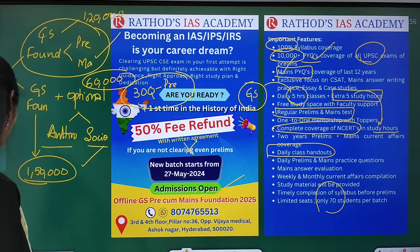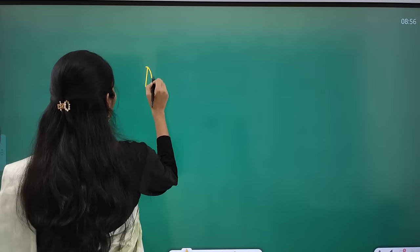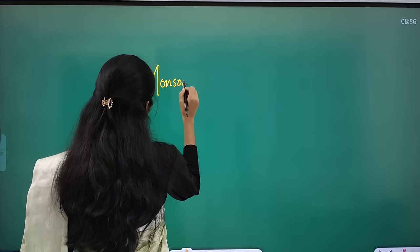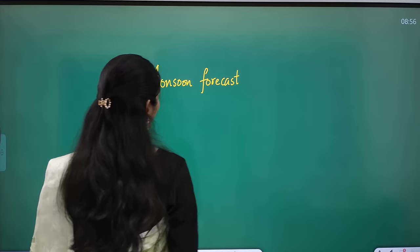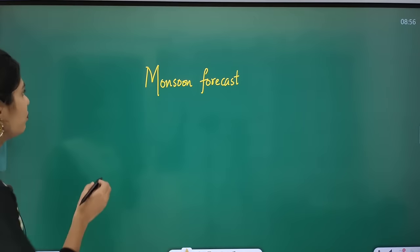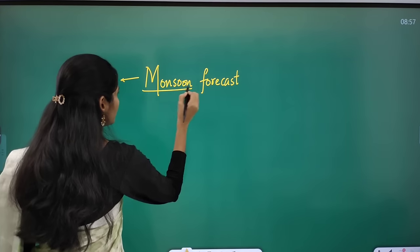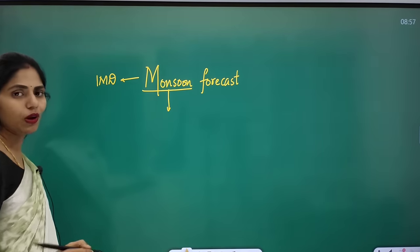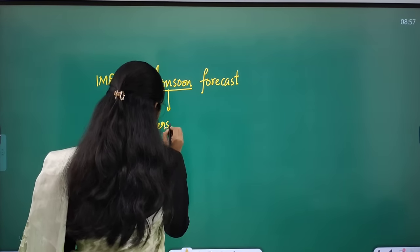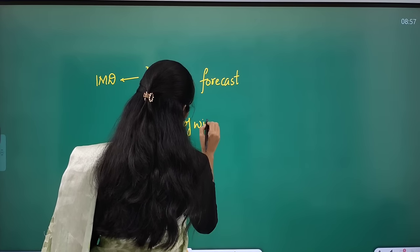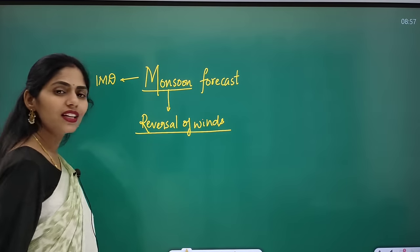Now let us see the first article — it is about monsoon forecast. The forecast which came up from IMD: what is the meaning of monsoon? Monsoon is nothing but a reversal of winds. Why is there a reversal of winds? I will draw a schematic diagram so that you can understand.